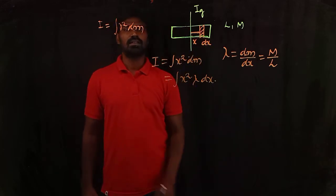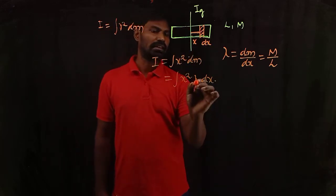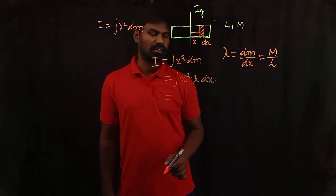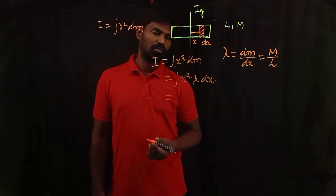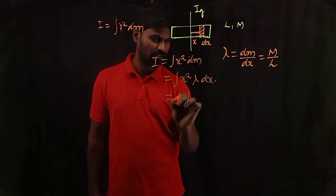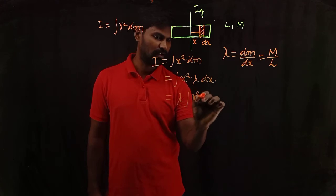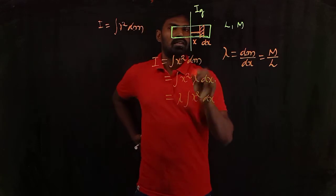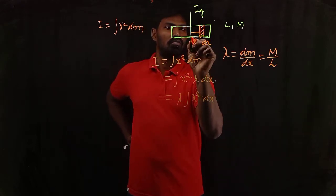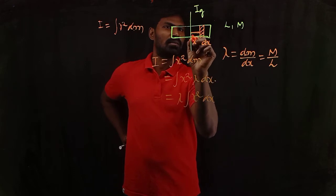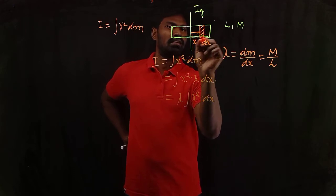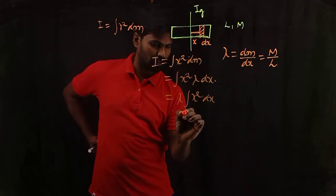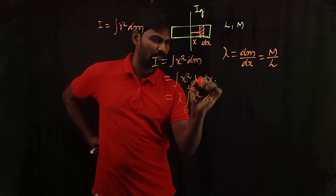Here I consider a uniform rod, so its linear density is constant. If it were variable, you couldn't pull it outside the integration. Since I assume uniform mass density, lambda can be taken outside the integral, giving I equal to lambda times the integral of x² dx. The limits of integration: for the right-side portion, the strip x-value moves from x equals 0 to L/2.